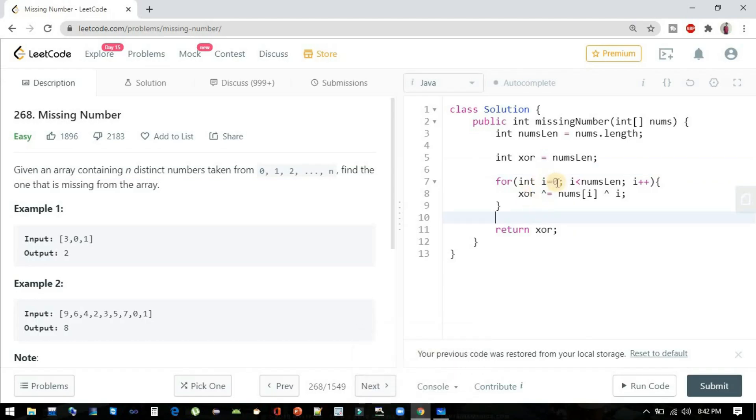And when we are iterating our array, what we are doing is nums[i] XOR index, and we are also updating our XOR variable. At the end of this loop, our XOR variable will only contain the missing number.